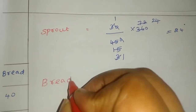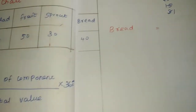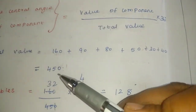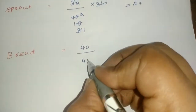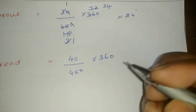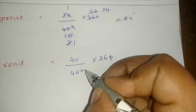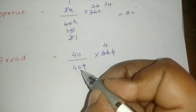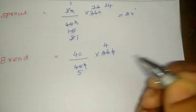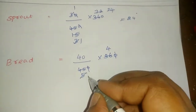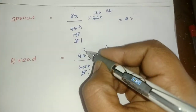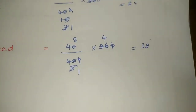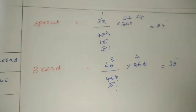The final item is Bread. The value of component for Bread is 40, total value is 450, multiplied by 360. After cancelling zeros and calculating: the degree for Bread is 32 degrees.